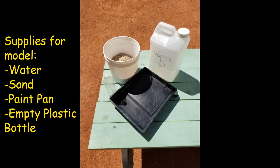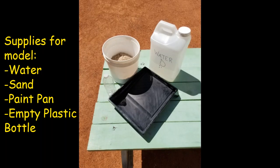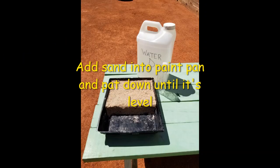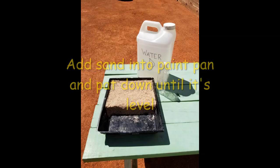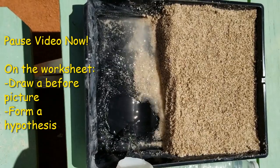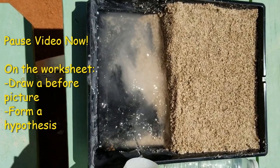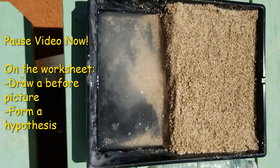Let's get started on our activity. For our model, we will be using water, sand, a paint pan, and an empty plastic water bottle. To get started, we're going to add our sand into the paint pan, and then we're going to pat it down so that it's all level. I put my sand on the sloped part of the paint pan, and then I used my hands to pat it down level and create a cliff. Now we are going to add the water. Once I've added the water, pause the video to complete the first half of the worksheet. What is the agent of erosion? Draw a before picture of the landscape and form a hypothesis. What do you think is going to happen?